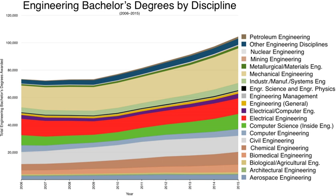In the fifth year of HTL, as in other secondary schools in Austria, there is a final exam called Matura. Graduates obtain an engineering degree after three years of work in the studied field.